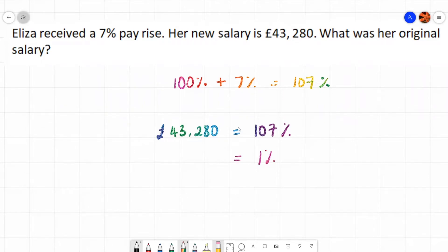what do we do to 107 to get 1? Well, we divide by 107, don't we? Because 107 divided by 107 is 1%. We do exactly the same on the other side. We are going to divide by 107.